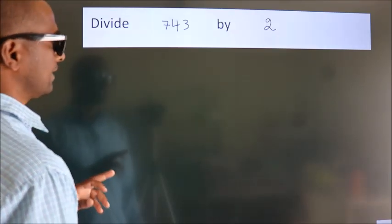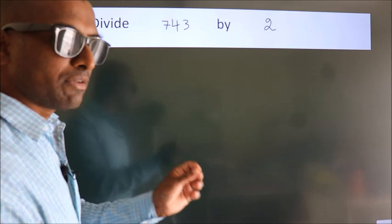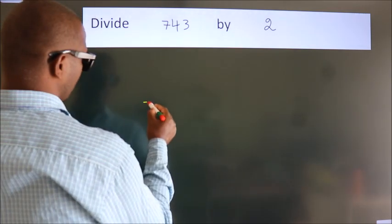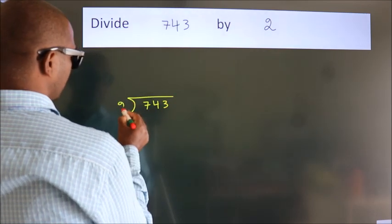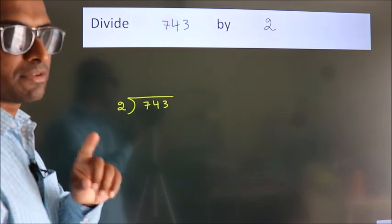Divide 743 by 2. To do this division, we should frame it in this way. 743 here, 2 here. This is your step 1.